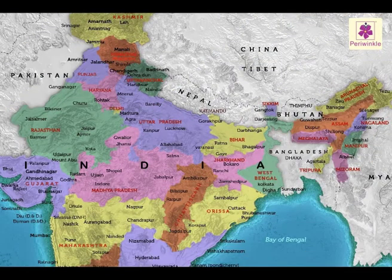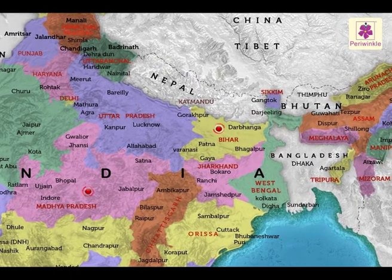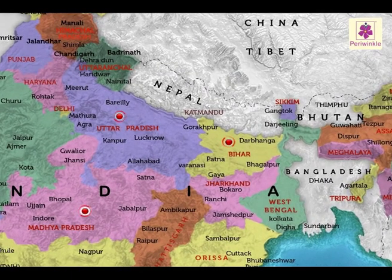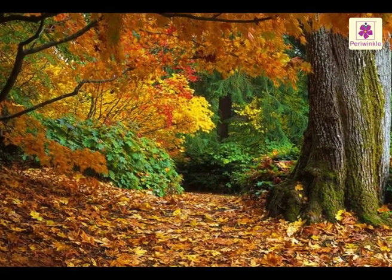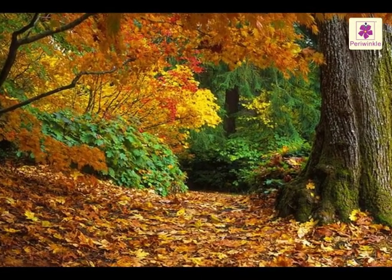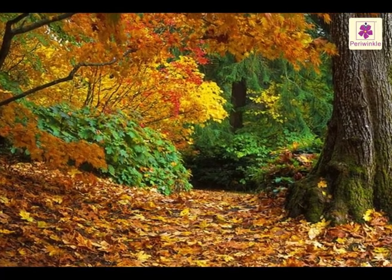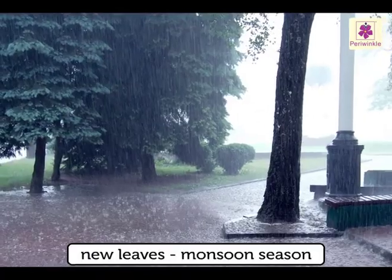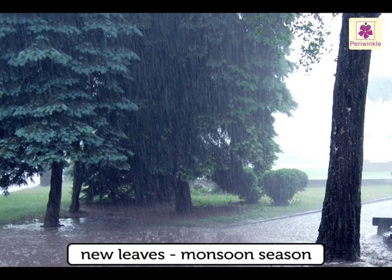These are found in the forests of Madhya Pradesh, Bihar, and Uttar Pradesh. These trees shed their leaves just before the hot, dry summer months. New leaves grow during the monsoon season.